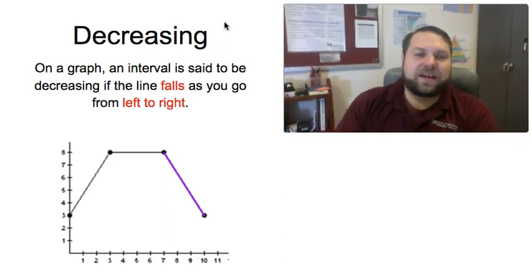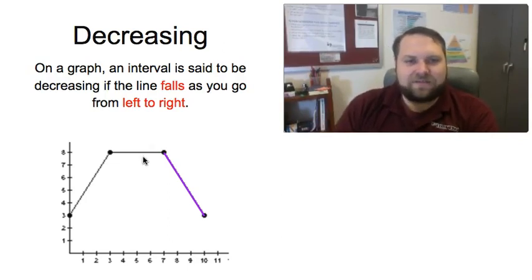I can also find this by just looking at the graph. If as I go left to right over this interval it feels like I'm going downhill, that is the function is falling, then we would say that this interval is decreasing.